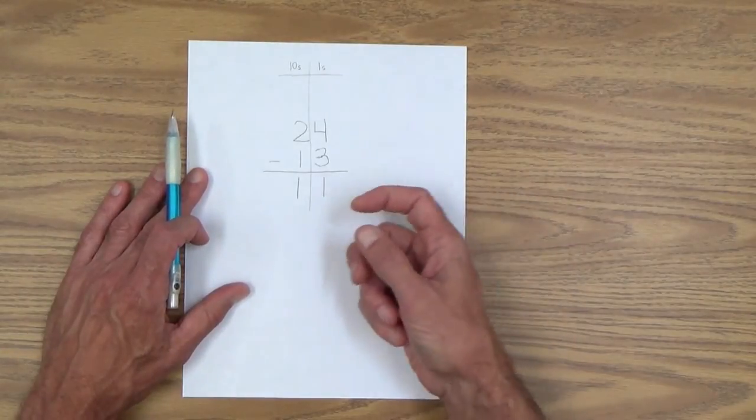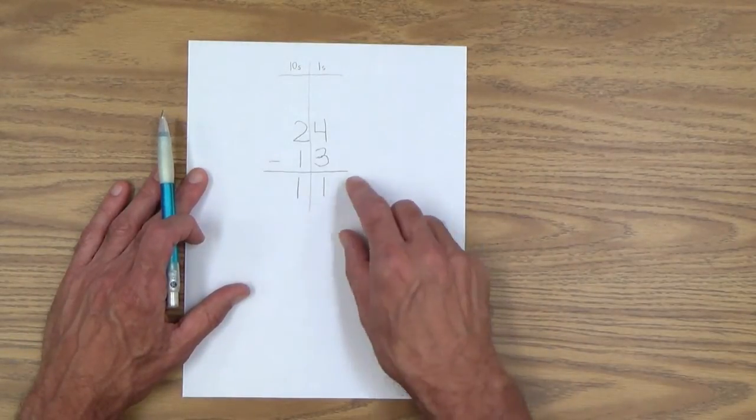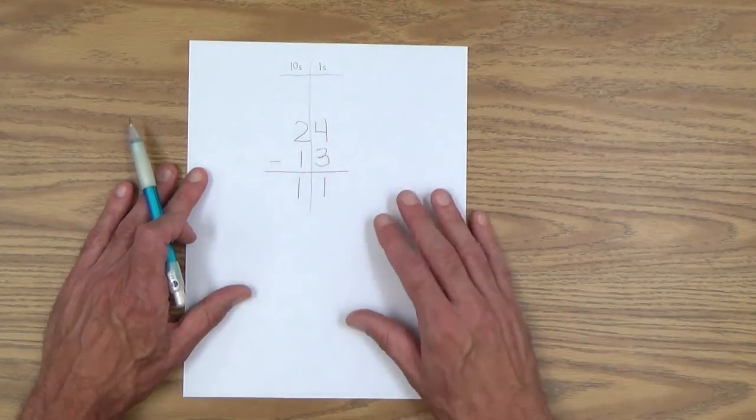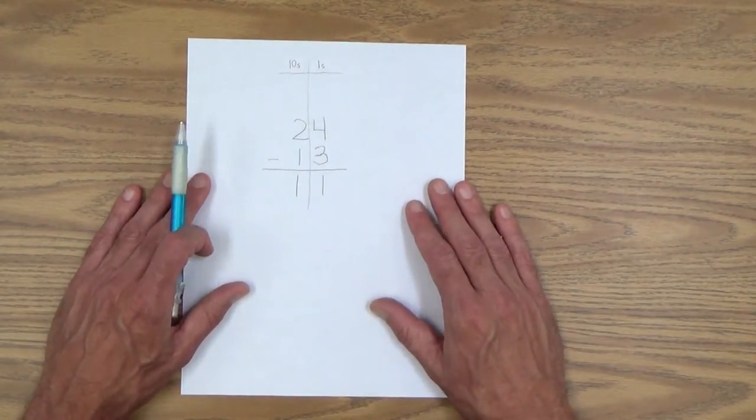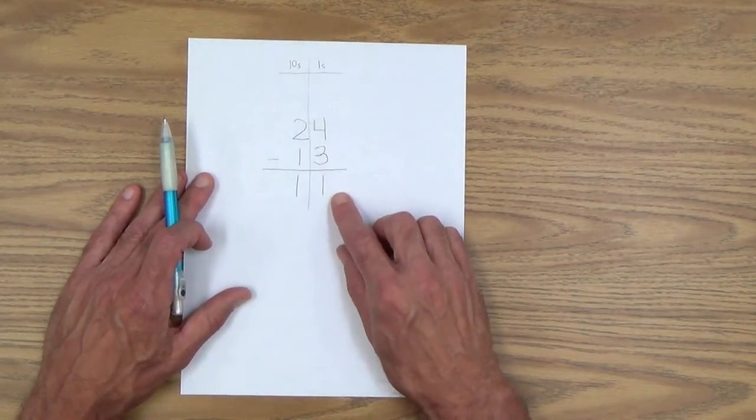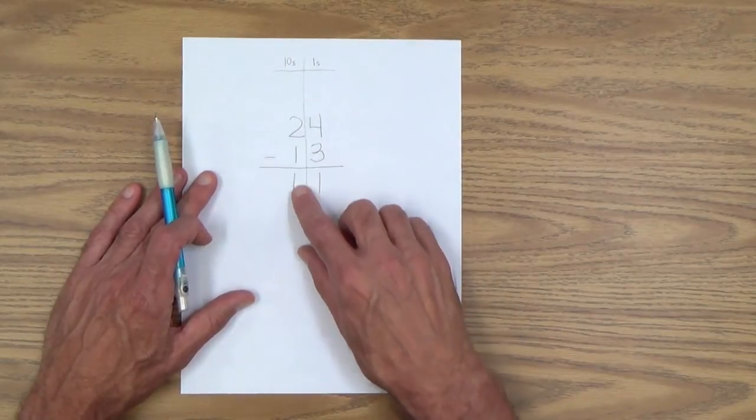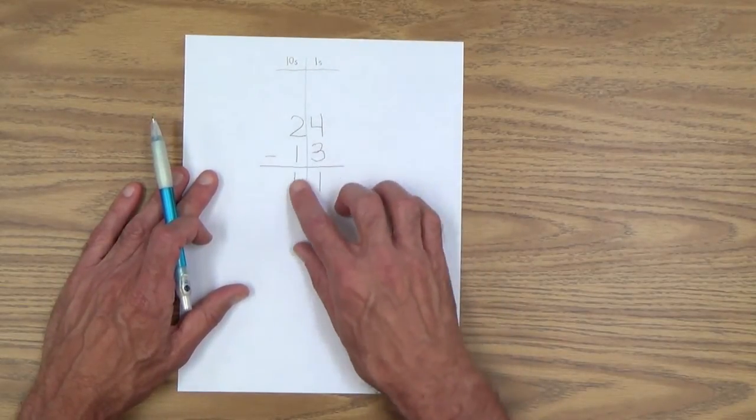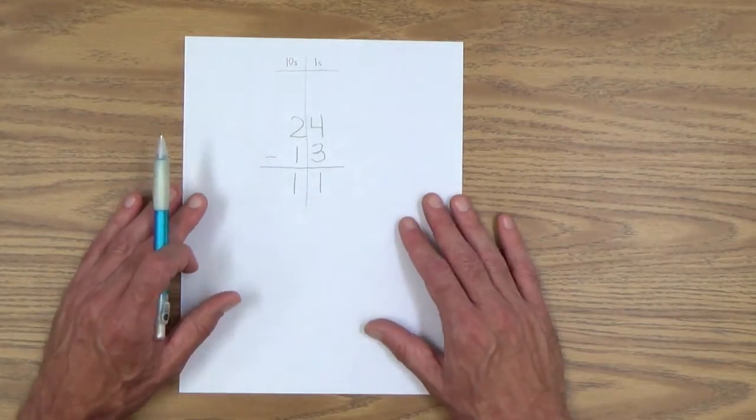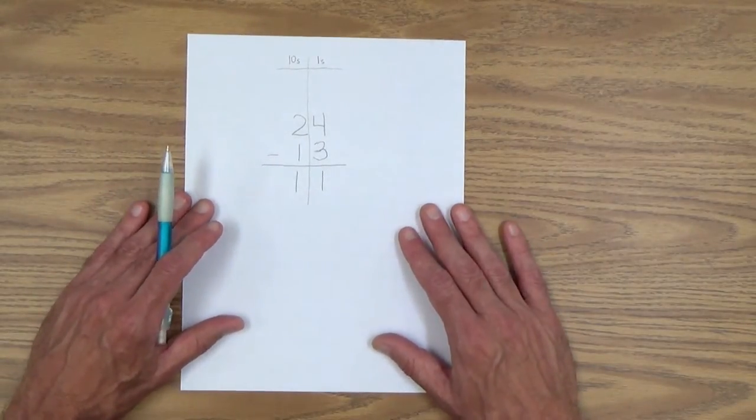So review. We solve these problems right to left ones and then tens. And of course, on to hundreds and whatnot. Subtract the numbers in the ones column, subtract the numbers in the tens column, then read the problem and the answer. So let's do maybe one more here.